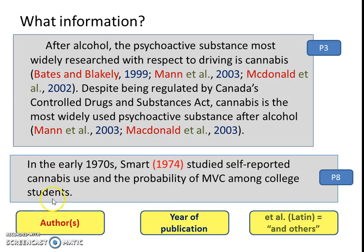So again we look here — we have our authors, we have our year. We have our authors followed by 'et al.' What is et al.? Well, if there are many, many authors — when there's more than two authors — we write et al., which means all the other authors. It's a short way of listing them.